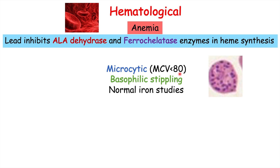This microcytic anemia has particular characteristics, including basophilic stippling — little granules found in the cells. Another important feature is that there are oftentimes going to be normal iron studies. This is important because iron deficiency anemia is also a cause of microcytic anemia, but in lead poisoning the microcytic anemia is not caused by iron deficiency — it's caused by the lead itself, so iron levels will be normal.